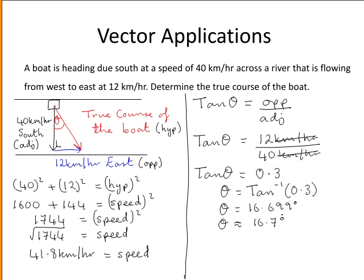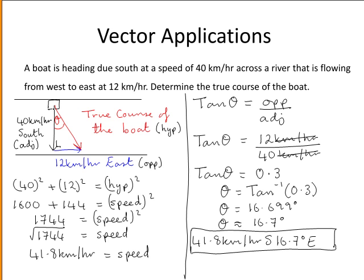So the true course of the boat is equal to 41.8 km per hour south 16.7 degrees east. So the direction of the angle is south and then you veer 16.7 degrees east. So this is the true course of the boat.